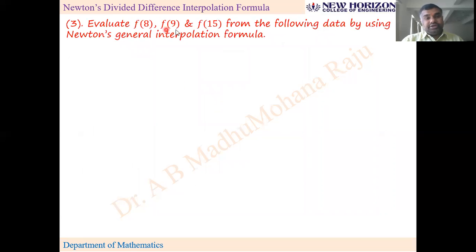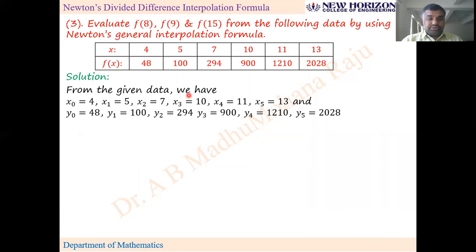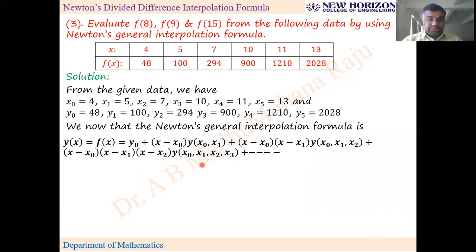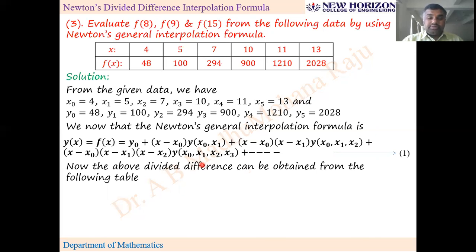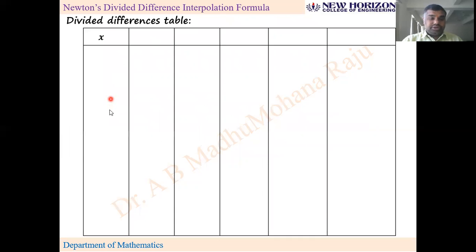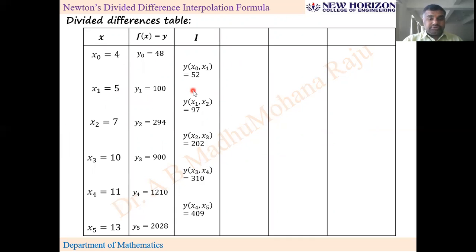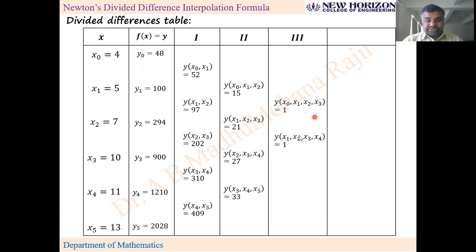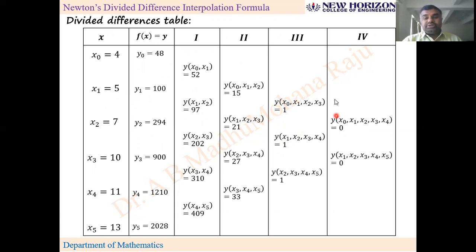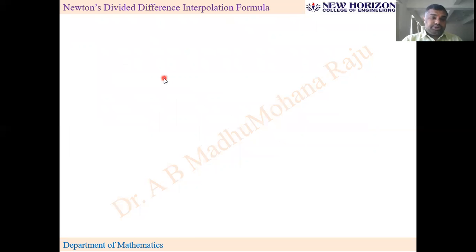Next problem: Evaluate f(8), f(9), and f(15) from the following data. List out x values and y values, write Newton's divided difference interpolation formula, and construct the divided differences table with first, second, and third order differences. The fourth order differences are not required as they come to zero.